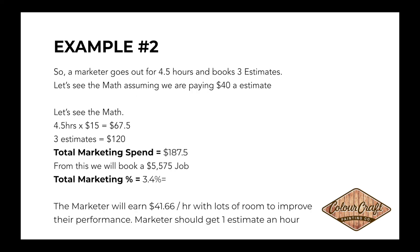A marketer goes out for four and a half hours and books three estimates. Assuming we're paying $40 per estimate: four and a half hours times $15 gives $67.50 base pay, plus $120 for three estimates — total marketing spend of $187.50. We know we'll on average book a $5,575 job, so dividing $187.50 by $5,575, the marketing spend comes in at 3.4 percent — totally reasonable.